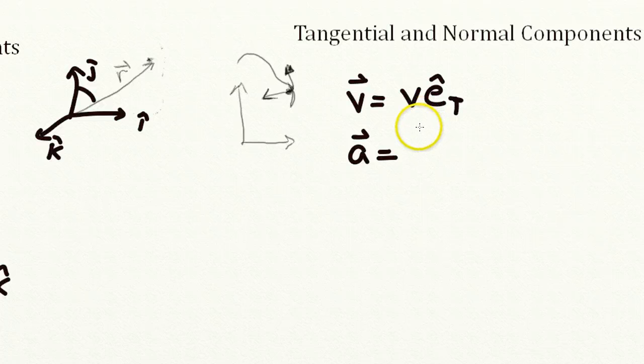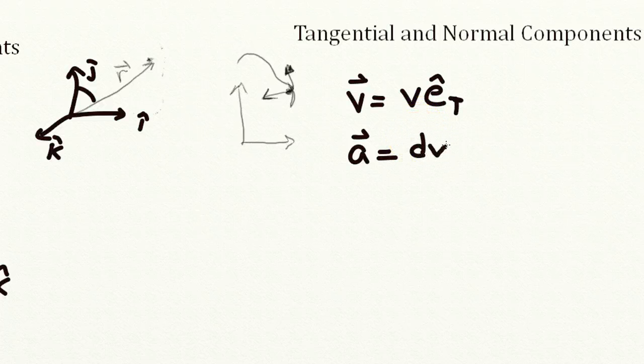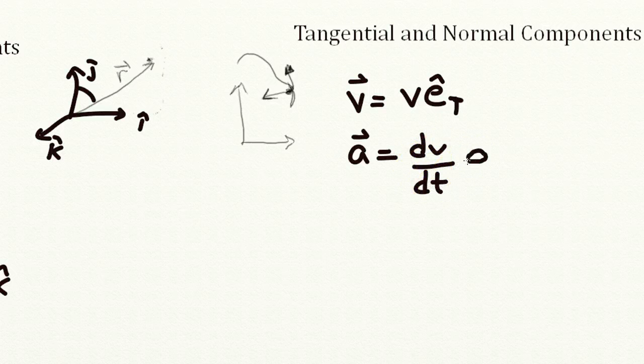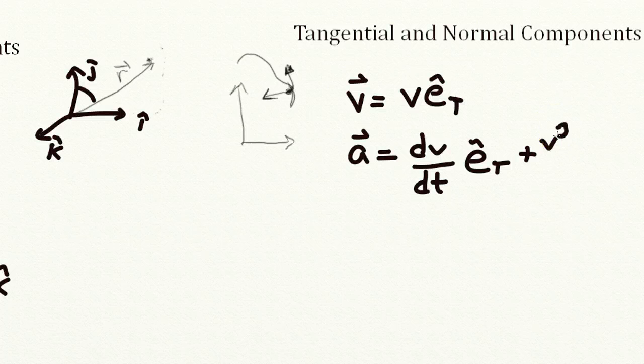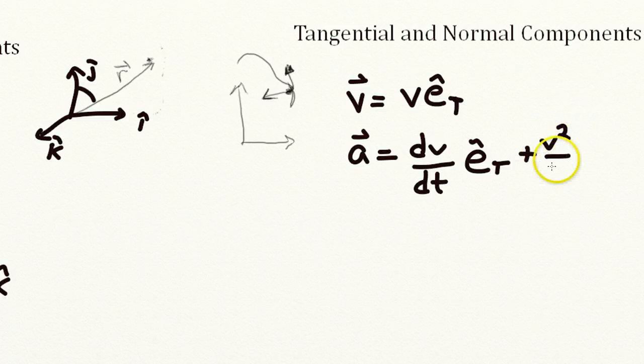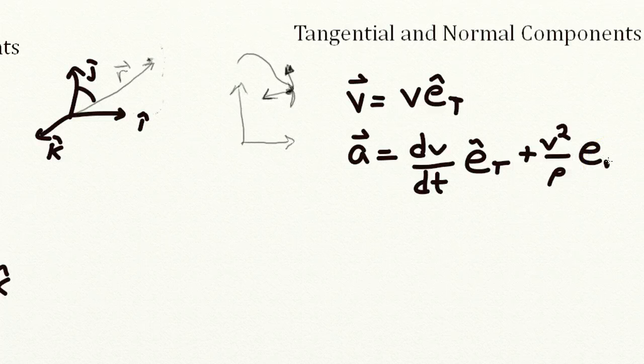The acceleration will equal the time derivative of the velocity in that tangential direction, plus v squared divided by rho, and I'll define that in a second, in the normal direction.